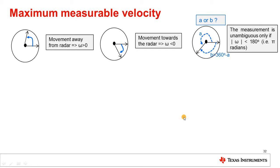Is there a limit on the maximum velocity that can be measured? The method relies on a phase difference measurement, which is unambiguous only as long as the difference is within plus or minus 180 degrees, or plus or minus pi radians. For positive velocities, the phasor moves anticlockwise; for negative velocities, clockwise. If the movement is more than 180 degrees, there is an ambiguity — one cannot conclude whether the phasor moved by angle A anticlockwise or angle B clockwise.